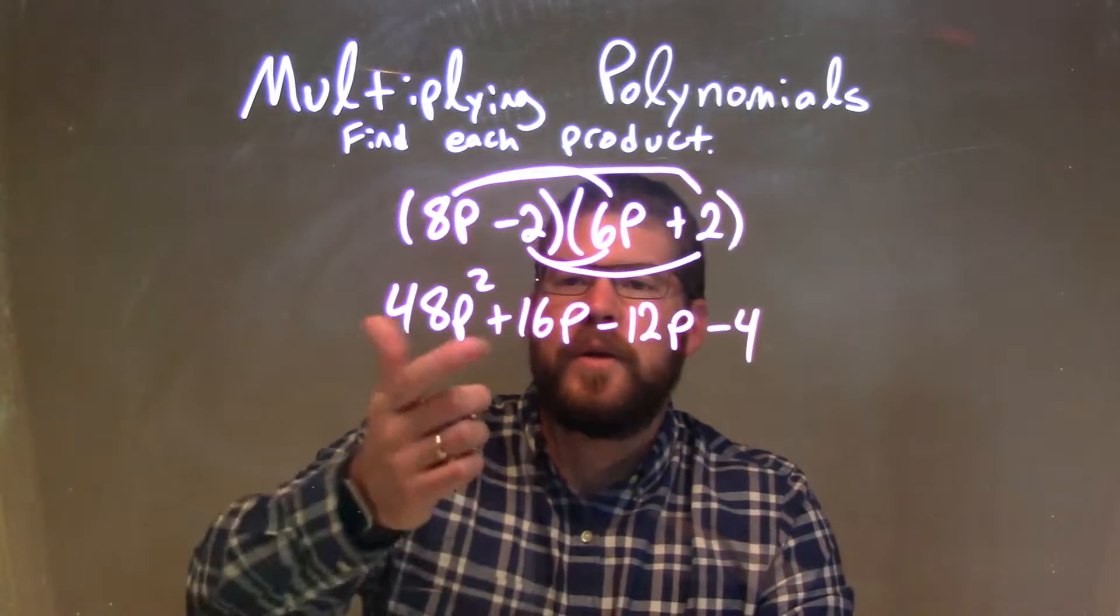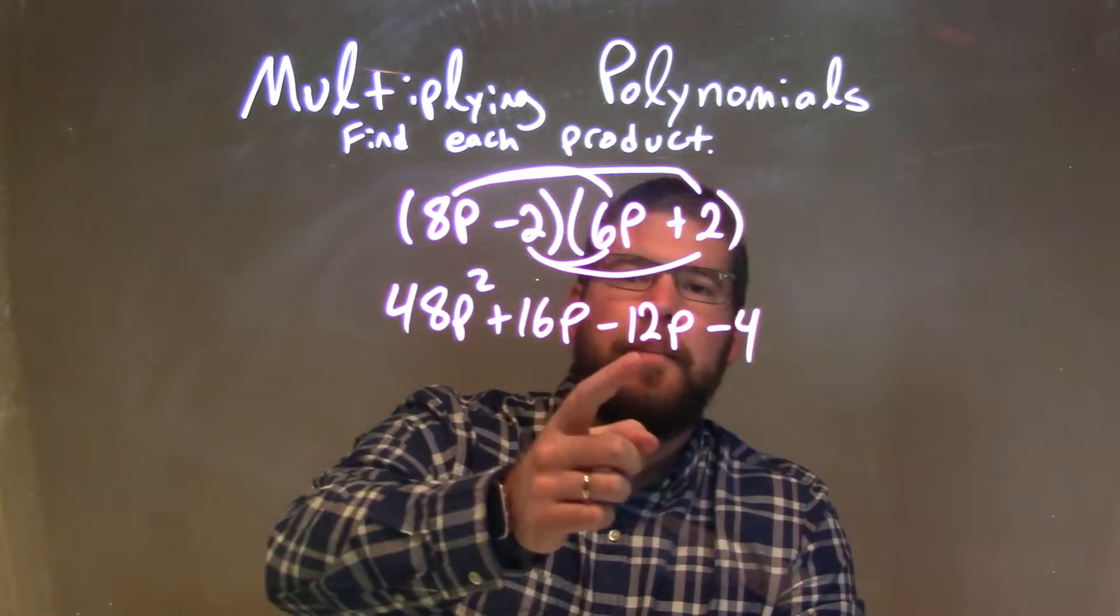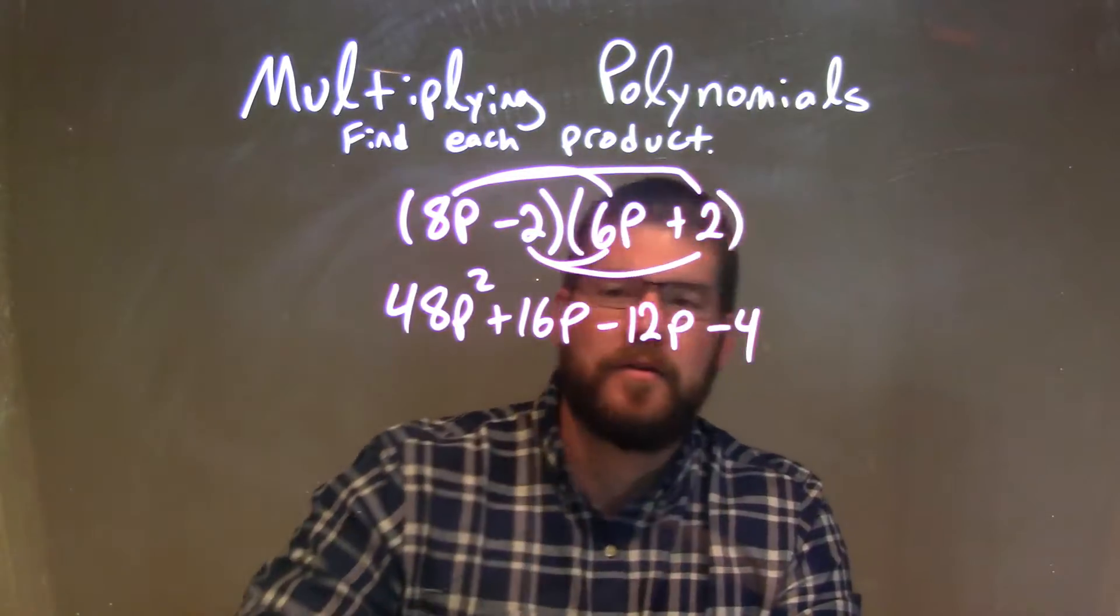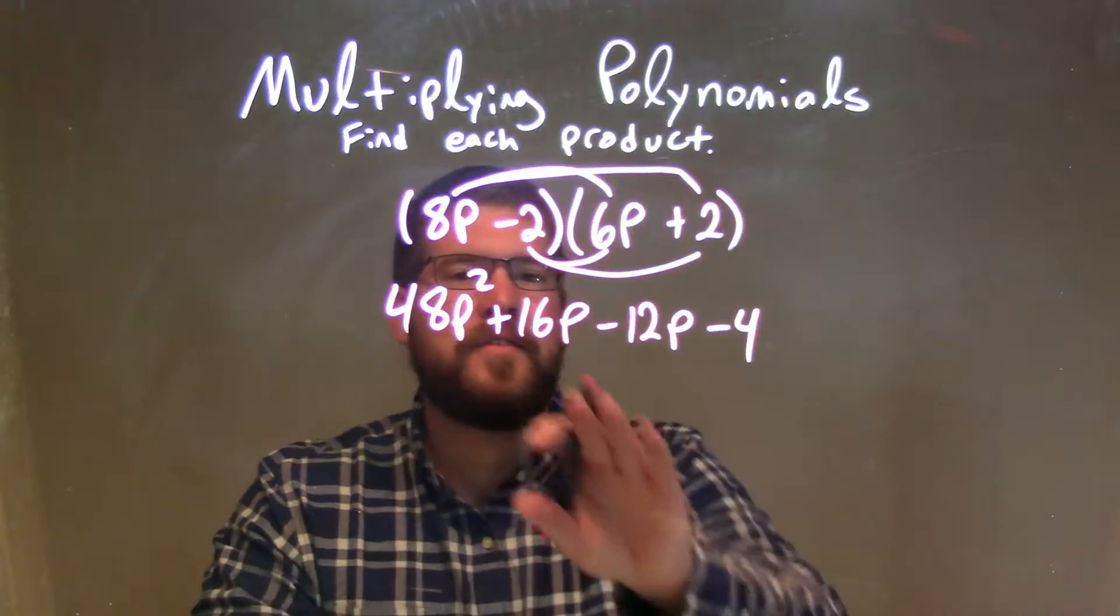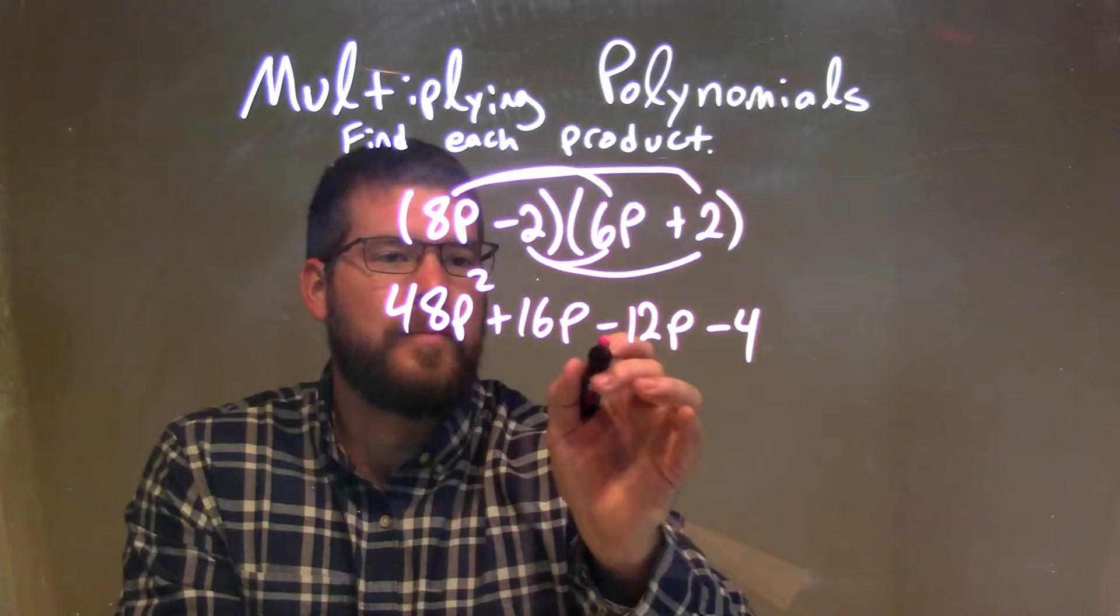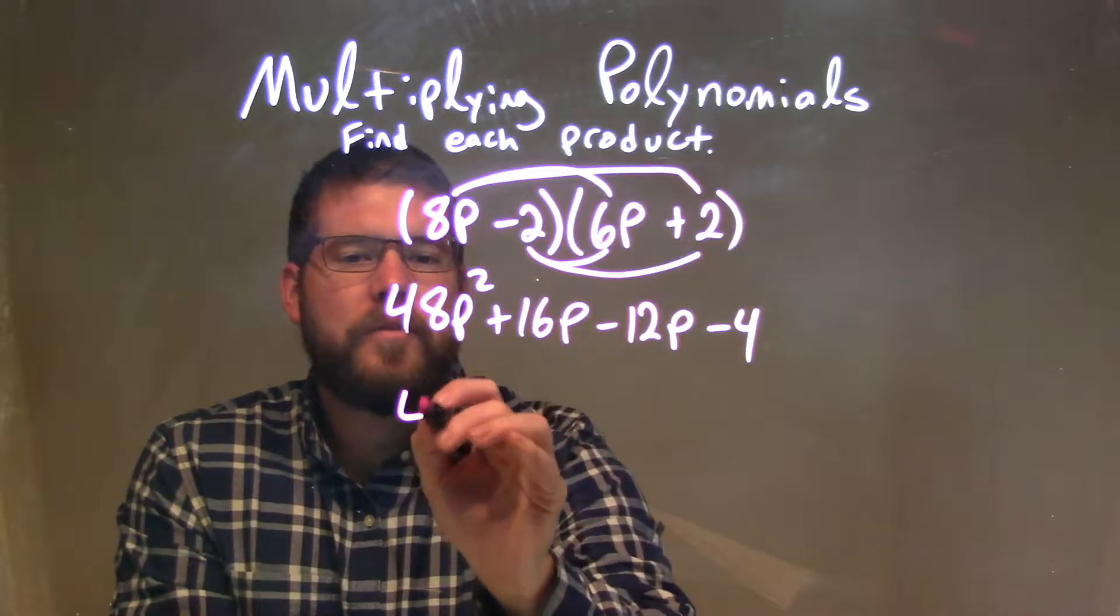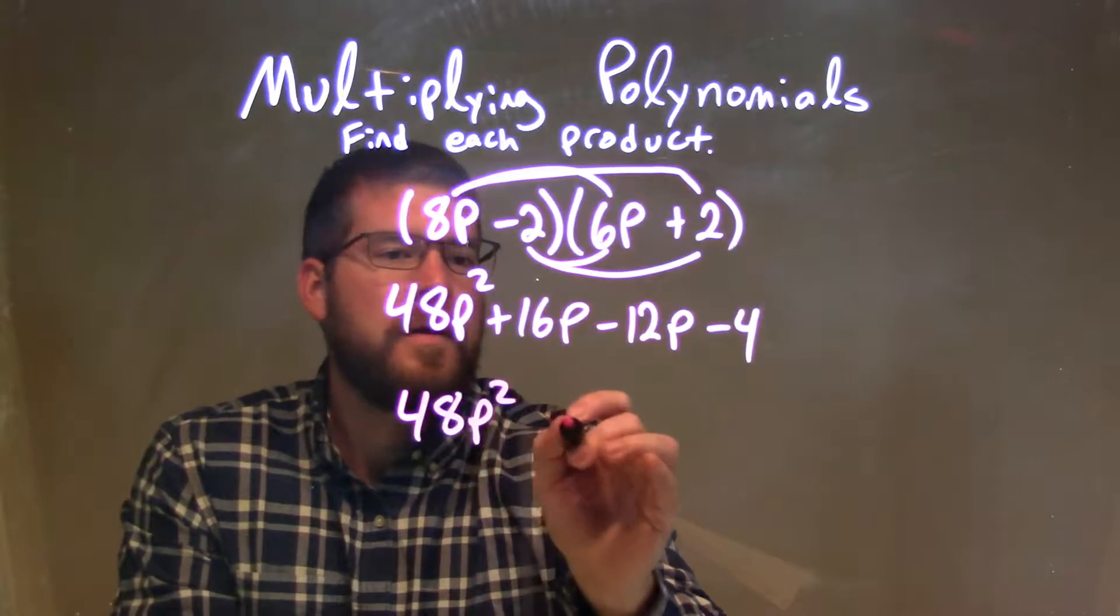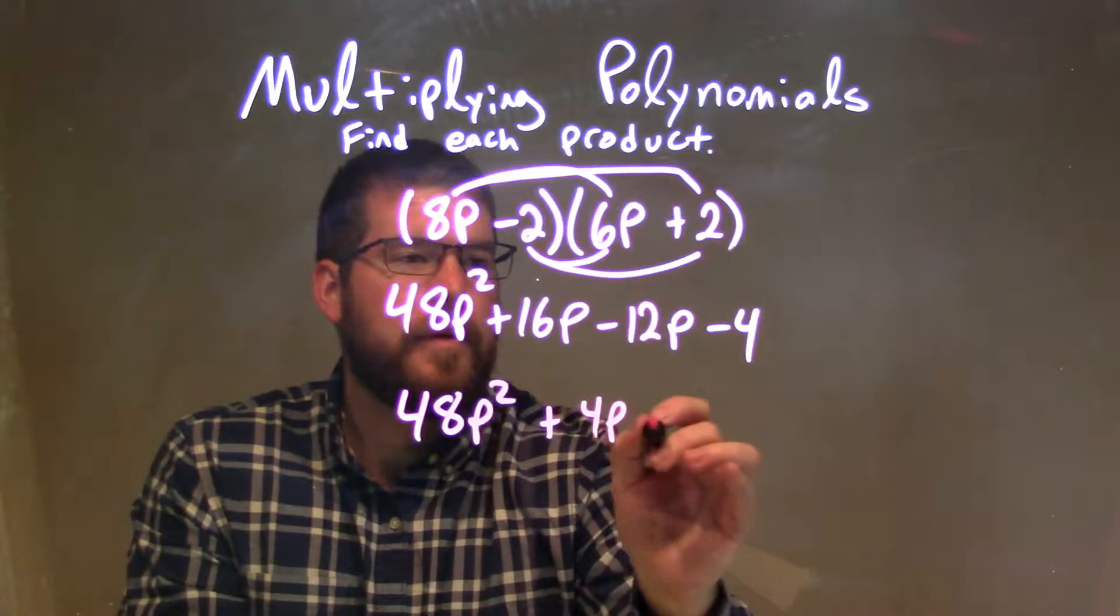Okay, so now we have 48p squared plus 16p minus 12p minus 4. Let's combine our like terms. I see in the middle 16p and 12p combined to be 4p, right, because we subtract them. 16p minus 12p. So our final answer here is 48p squared plus 4p minus 4.